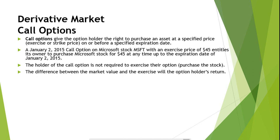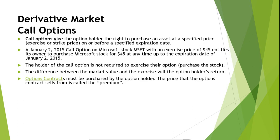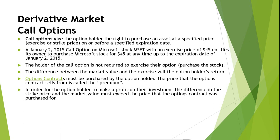This way the option holder can purchase the stock at a price that is lower than market value and then resell it at market value. The difference between the market value and the exercise price will be the option holder's return. Options contracts must be purchased by the option holder. The price that the options contract sells for is called the premium. In order for the option holder to make a profit on their investment, the difference in the strike price and the market value must exceed the price that the option contract was purchased for.